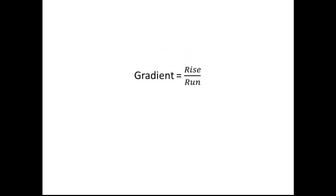To calculate gradient, we use the formula rise over run. Using the values we just obtained, we substitute these into this equation. This gives us 6 over 12, which equals 0.5. Therefore, the gradient of that hill is 0.5.